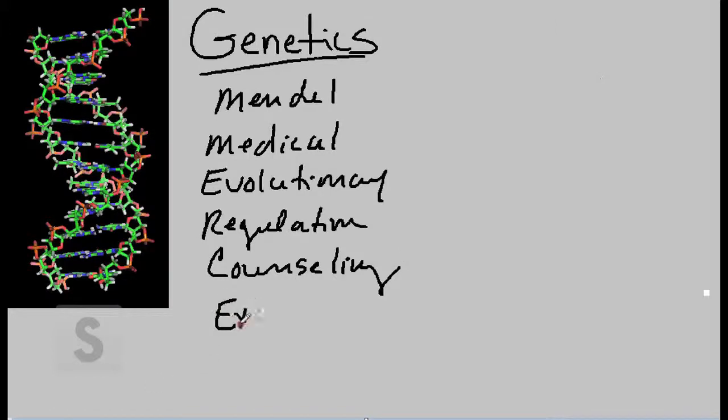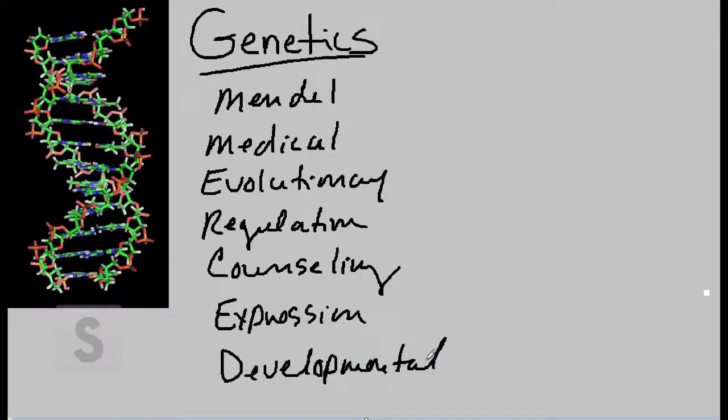Gene expression looks at information in a gene and how it's used to synthesize a product. And then, of course, developmental genetics, which looks at how genes are turned on and off as a zygote or embryo develops into an adult. And this is just to name a few.